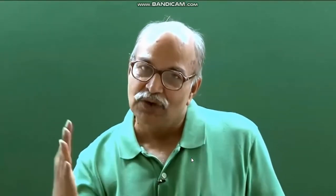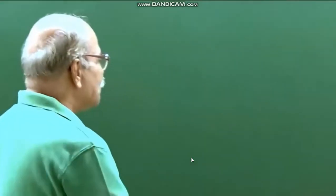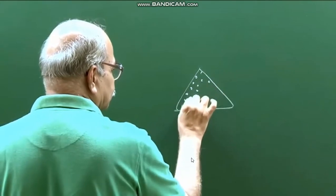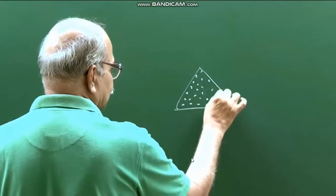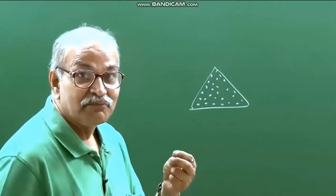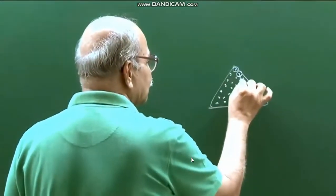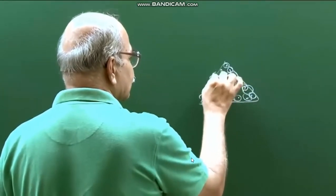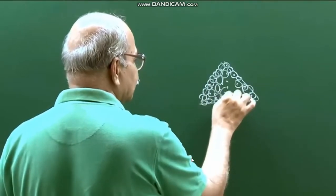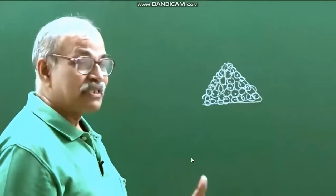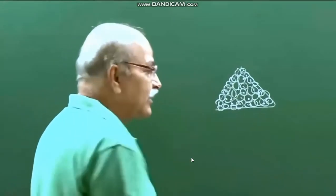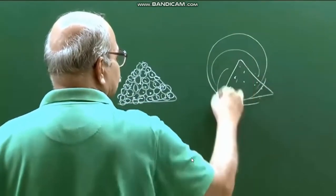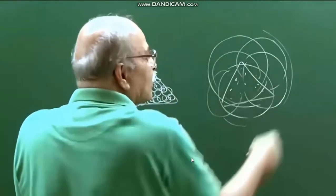Now if the screen is close, all these circles are small. Suppose your opening is triangular — these are the points, all triangular. Each point is making a circular disc, but if the screen is close those discs are small, so the triangular shape is still maintained. But if the screen is far away and these circles become large, the centers are spread across the triangular opening but you are drawing large overlapping circles, and what you will see is a round, circular thing.